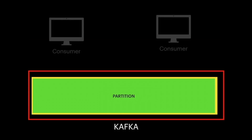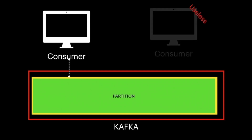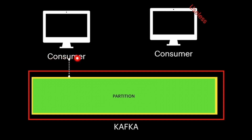Consider a scenario where we have a Kafka topic with only a single partition. One consumer subscribes to that partition and receives all messages. If we add more consumers hoping to achieve parallelism, those consumers are useless for parallel processing because a partition can only be subscribed by one consumer. They can act as standby consumers if the primary fails, but parallelism cannot be achieved with a single partition.